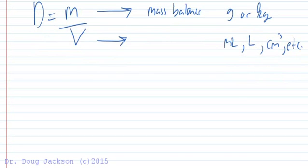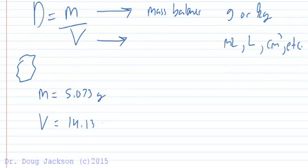Suppose we have an irregular solid described above whose mass we weigh to be with a balance, 5.073 grams to the milligram scale, a digital balance like we described in a previous video. And we measure the volume by difference to be 14.13 milliliters.